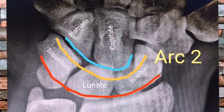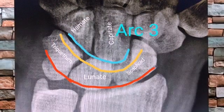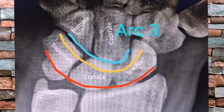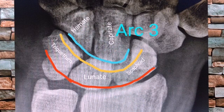lunate and triquetrum bones. Arc 3 is a smooth curve that follows the proximal curvatures of capitate and hamate bones.